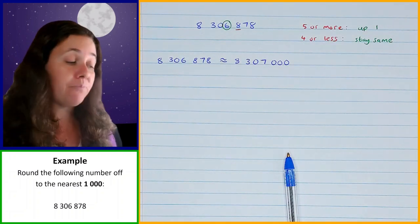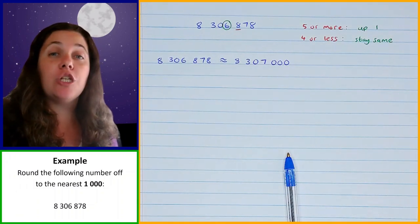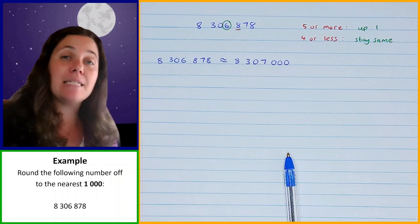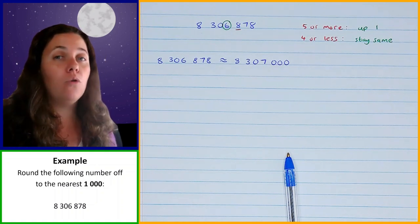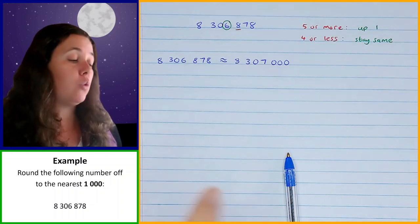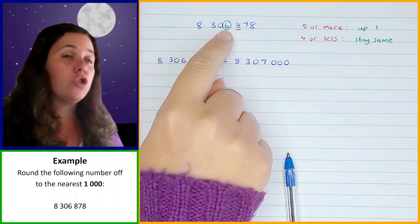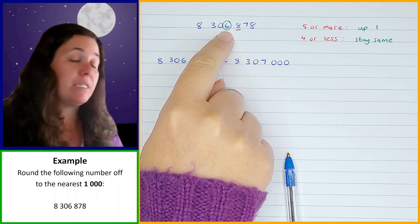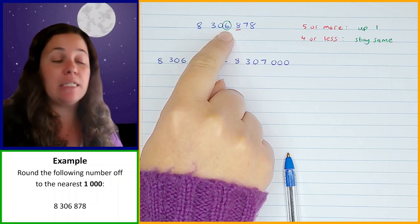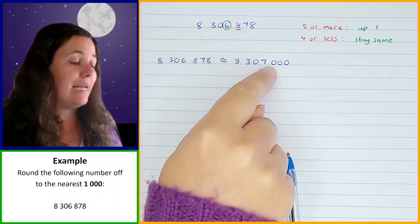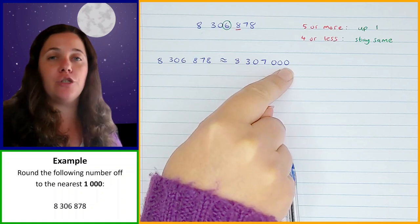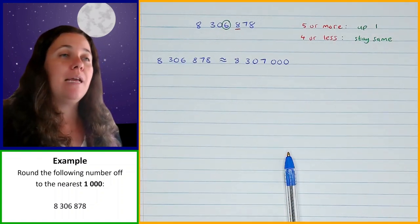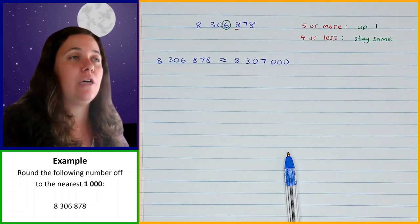First, identify which digit in your number is in the position that you're rounding off to. Then look at the next digit — is it 5 or more, or is it 4 or less? That tells you what to do to the digit you're rounding off to. Once you know whether it goes up 1 or stays the same, change that digit, and everything after it changes to zeros.